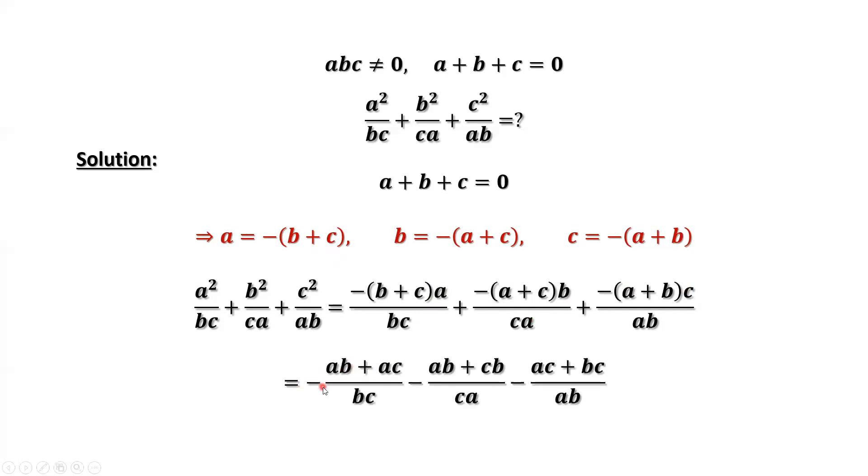Then you have negative sign here. That's AB plus AC, AB plus CB, AC plus BC. Now, we split each term into two terms.